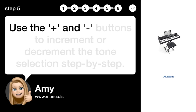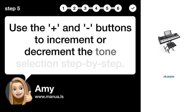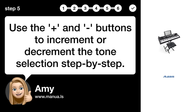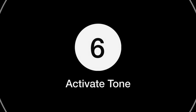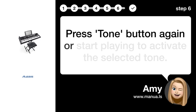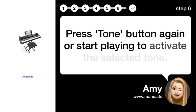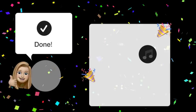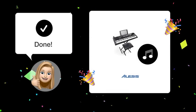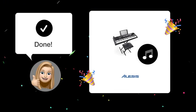Step 5: Adjust steps. Use the plus and minus buttons to increment or decrement the tone selection step by step. Step 6: Activate tone. Press the tone button again or start playing to activate the selected tone. After these steps, you should be able to access and select any tone on your Alesis Melody 61 MKII keyboard.